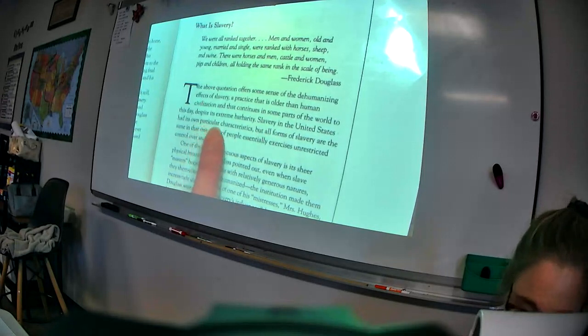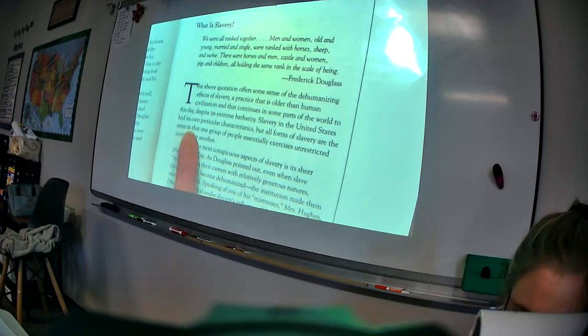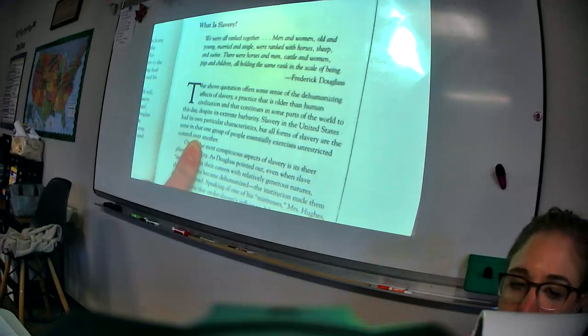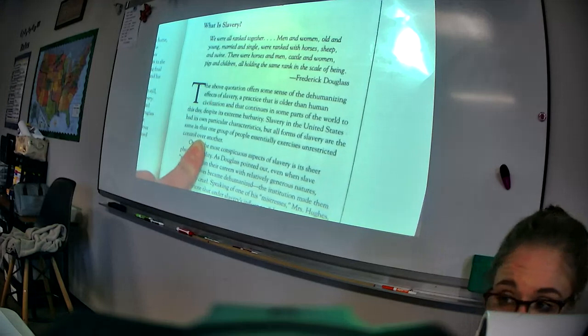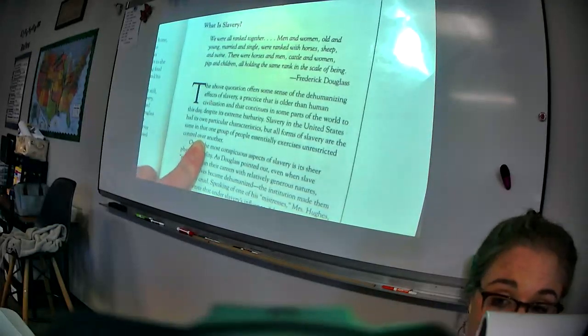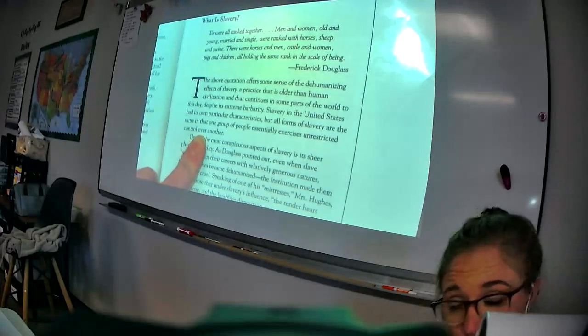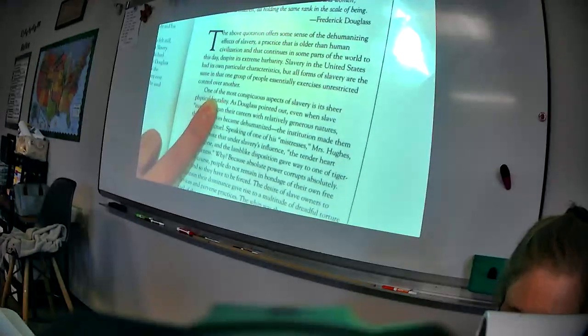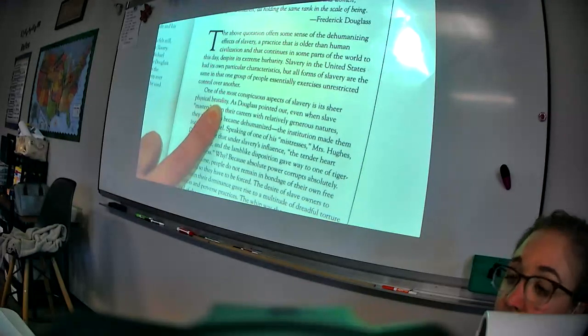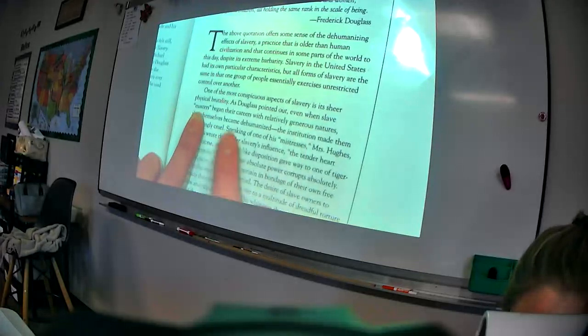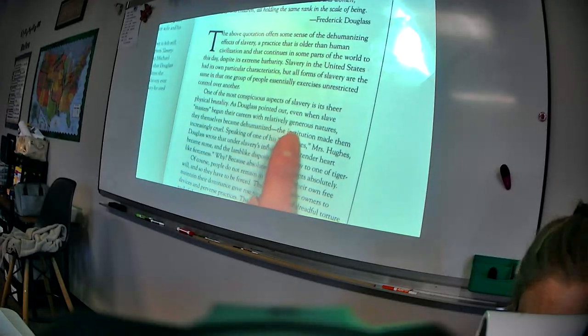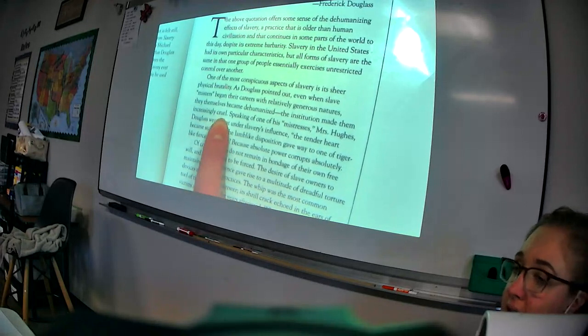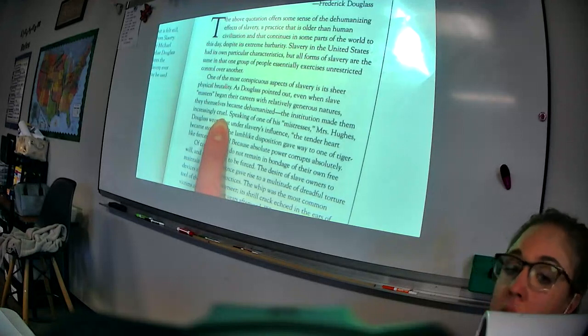The above quotation offers some sense of the dehumanizing effects of slavery, a practice that is older than human civilization and that continues in some parts of the world to this day, despite its extreme barbarity. Barbarity meaning this is barbaric, right? Almost like it's a common word used among pirates, but this is just purely evil. Absolutely barbaric. Slavery in the United States had its own particular characteristics, but all forms of slavery are the same in that one group of people essentially exercises unrestricted control over another. They control every aspect of that person's life. When they wake up, what they eat, how much they get to eat, how many clothes they get to wear, when they go to bed, what days they get a break and what days they don't, how much work they have to get done. If they don't get that much work, then they get whipped. They basically control whether a slave lives or dies.